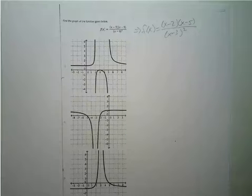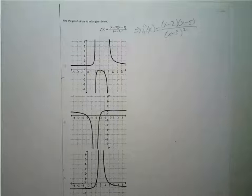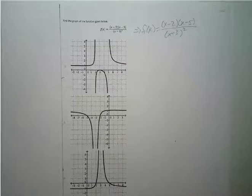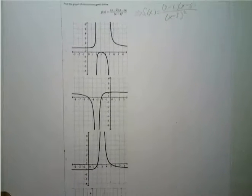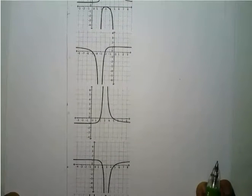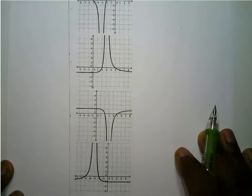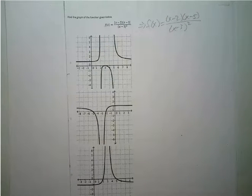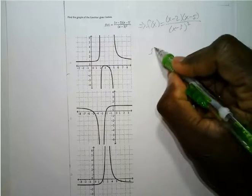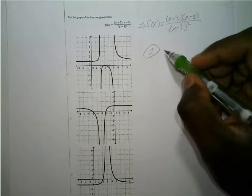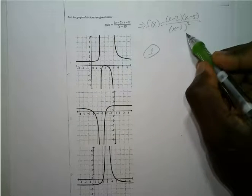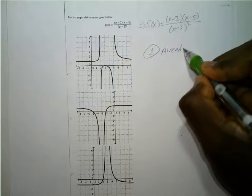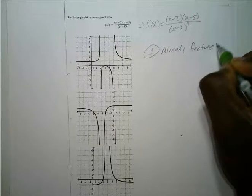We want to identify the graph of f of x equals x minus 2 times x minus 5 over x minus 3 squared. We have several graph options to choose from. The function is already factored and simplified, so we move to the second step.